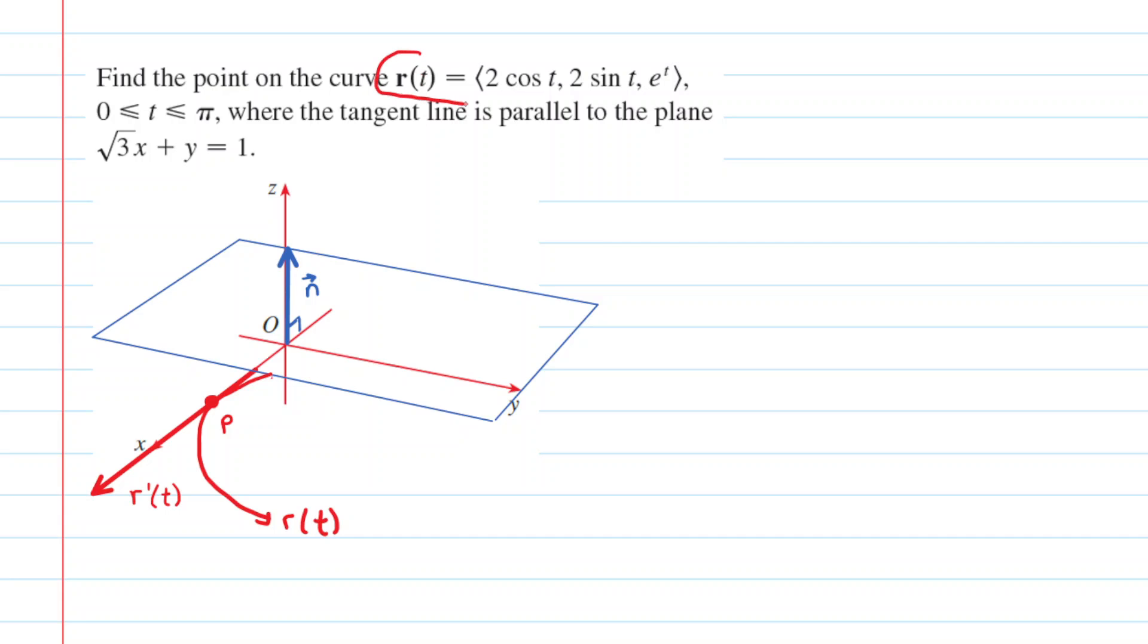In this question we are given a vector function, which we'll color red, and a plane, which we'll color blue. We're looking for a point on that vector function where the tangent line is running parallel to the plane.